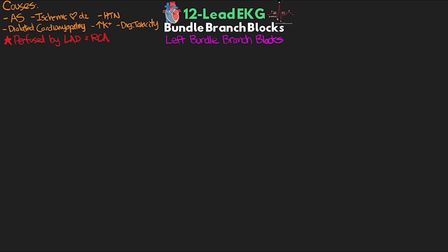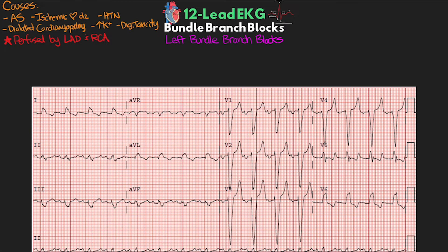In this first left bundle branch block example, it's clear we have a wide QRS greater than 0.12 seconds. Looking at V1, we see a large negative terminal deflection. Using our turn signal method, flipping it down means we're turning left — thus left bundle branch block morphology. We also note a positively shifted J point going opposite of that negative deflection, as well as a positively deflected T wave, both mimicking ST elevation. Looking at V6, we see the opposite — a large positive terminal wave, negative J point shifting, and negative T wave discordance.